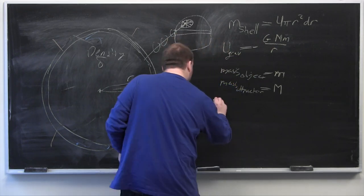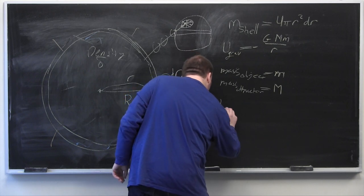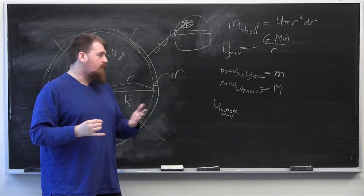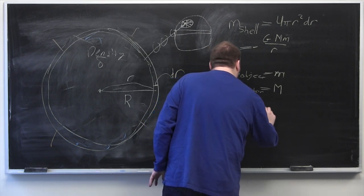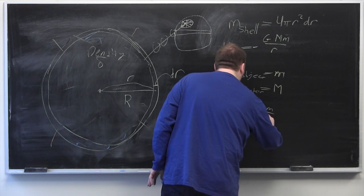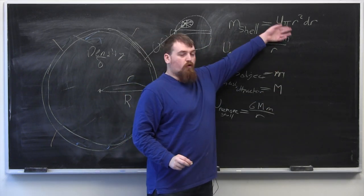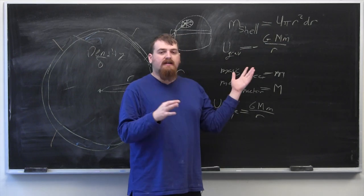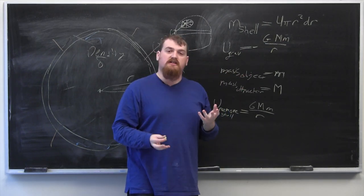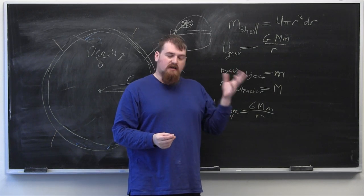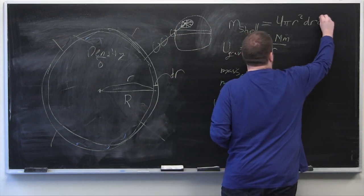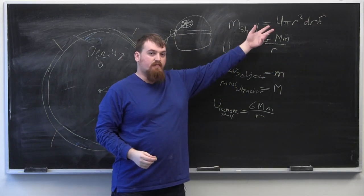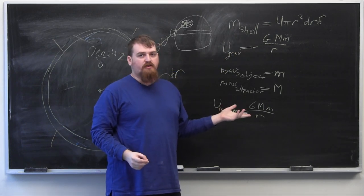So the energy that will be needed to remove one of these shells is going to equal positive g times big M times little m over r. But here we have that little m is equal to delta times 4 pi r squared dr, and big M is the mass of the sphere underneath the shell. So that's going to be 4 thirds pi r cubed delta. Oh, there's a delta here too. I forgot, since we need to consider the density. So big M is going to be 4 thirds pi r cubed delta.